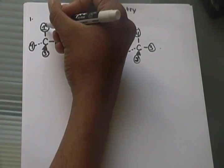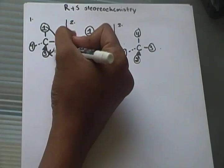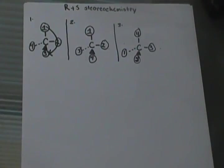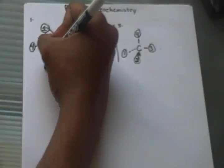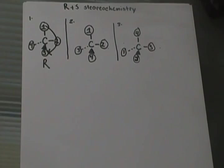I'm going to go from one to two to three and make a curved line. As you see, this is going clockwise, and if it's going clockwise, it is R. So whenever you're dealing with a fourth group going into the back of the page, you draw your curved line, and whatever stereochemistry you find with that curved line is the stereochemistry you keep.